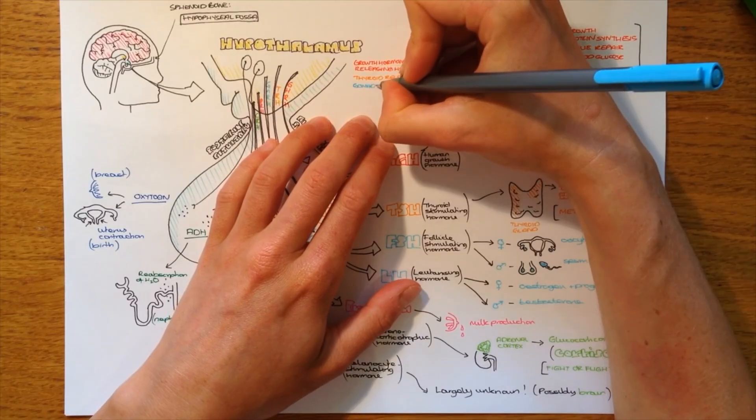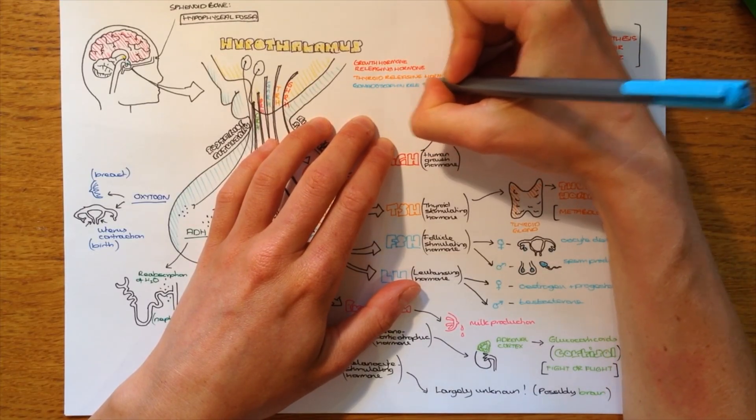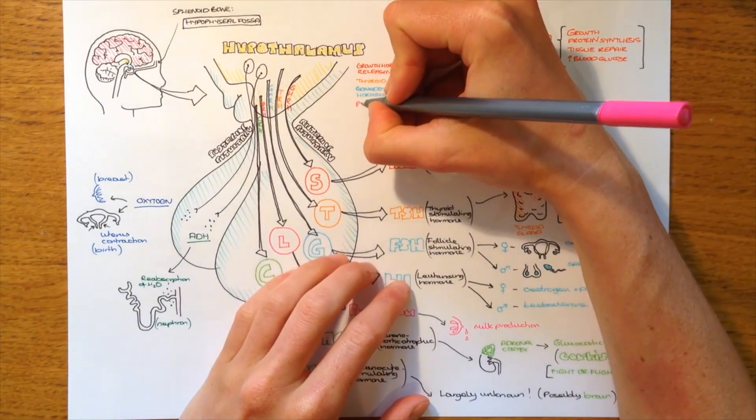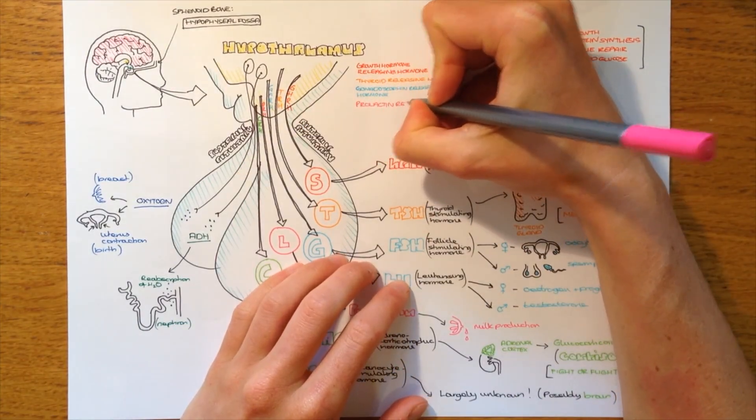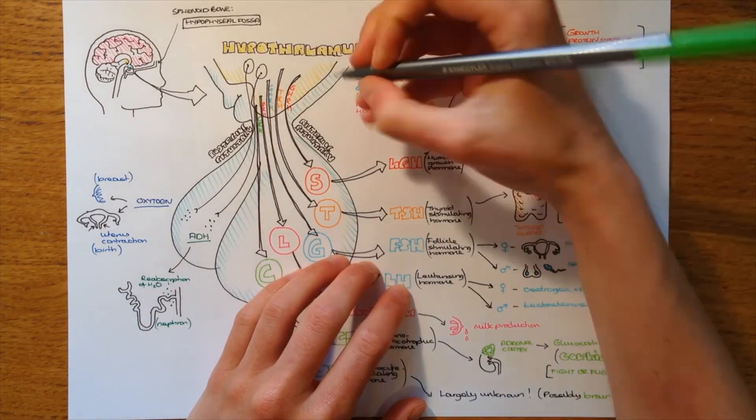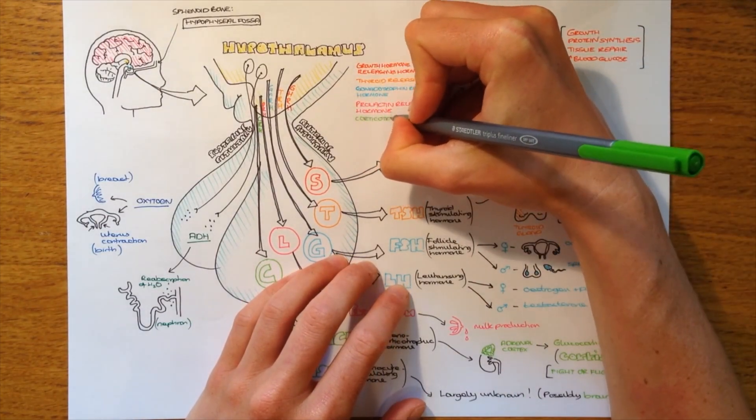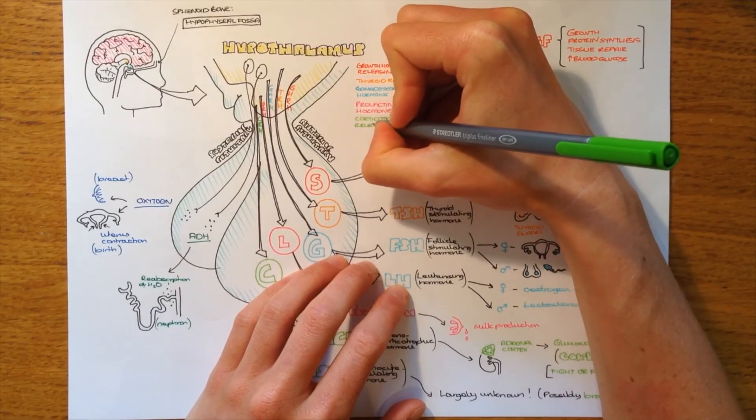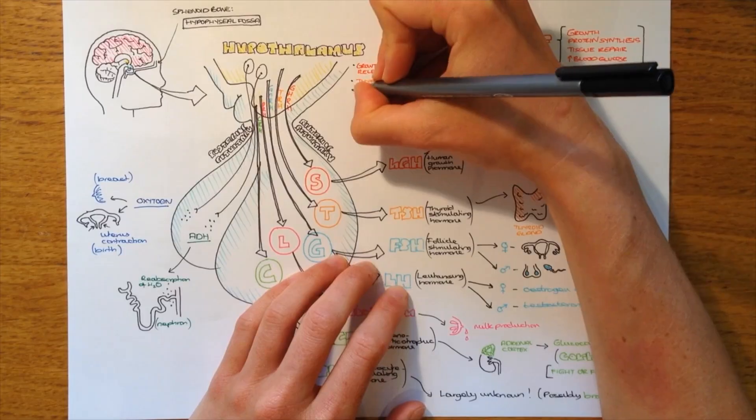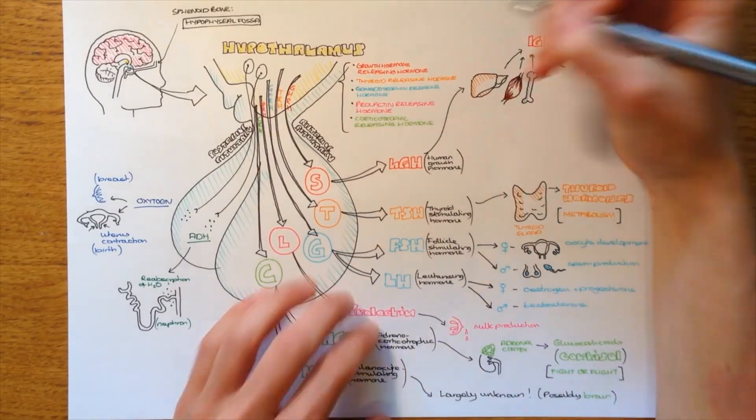So again, this has just been a really quick overview of the role of the pituitary and the hormones it produces. But each of these individually has its own feedback mechanism that controls its level in the blood and in the body, because the level of a hormone is really vital to its function. So, I hope to talk about those in some more videos. Thank you for watching.